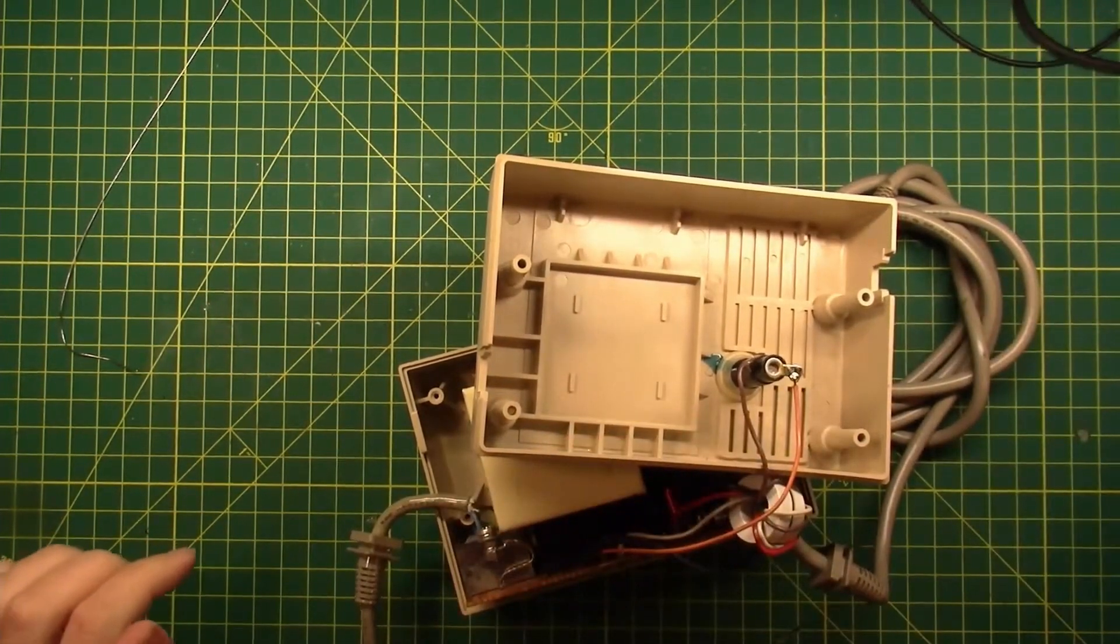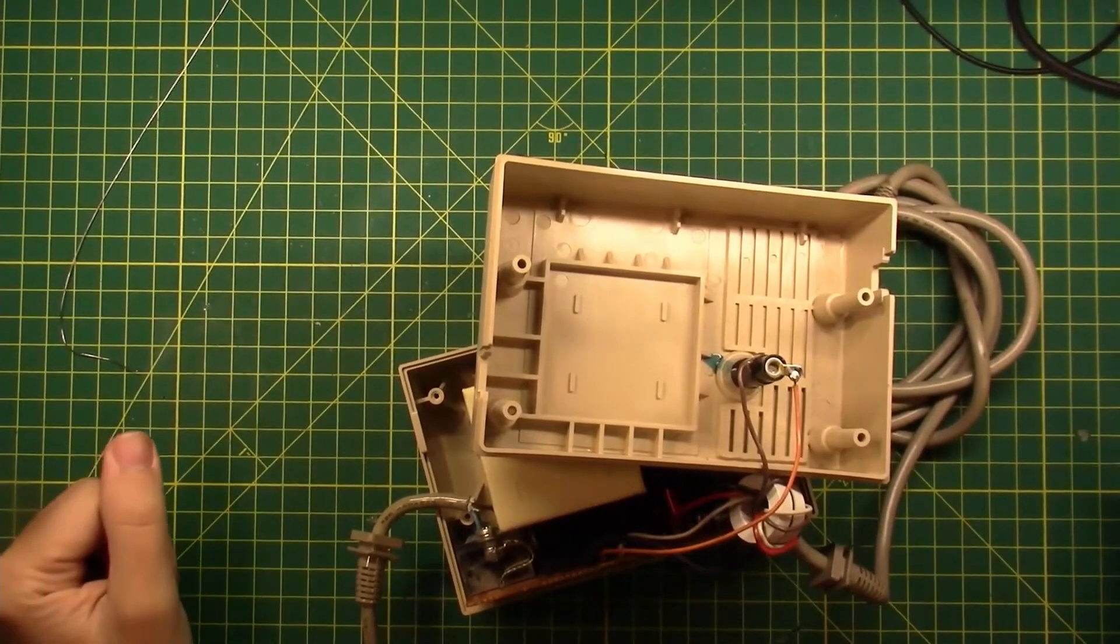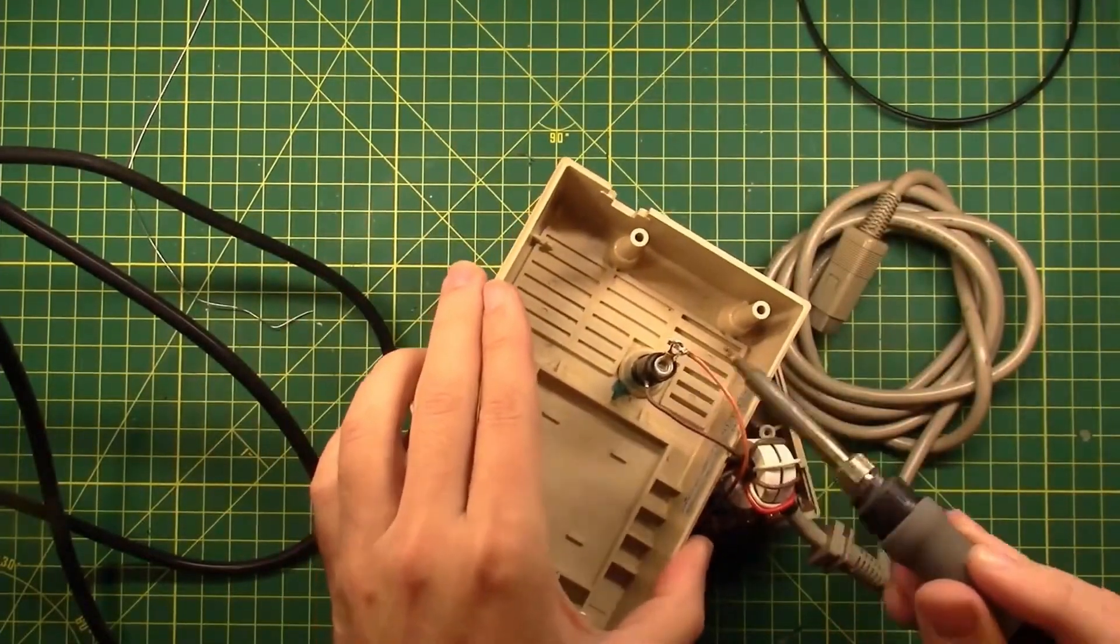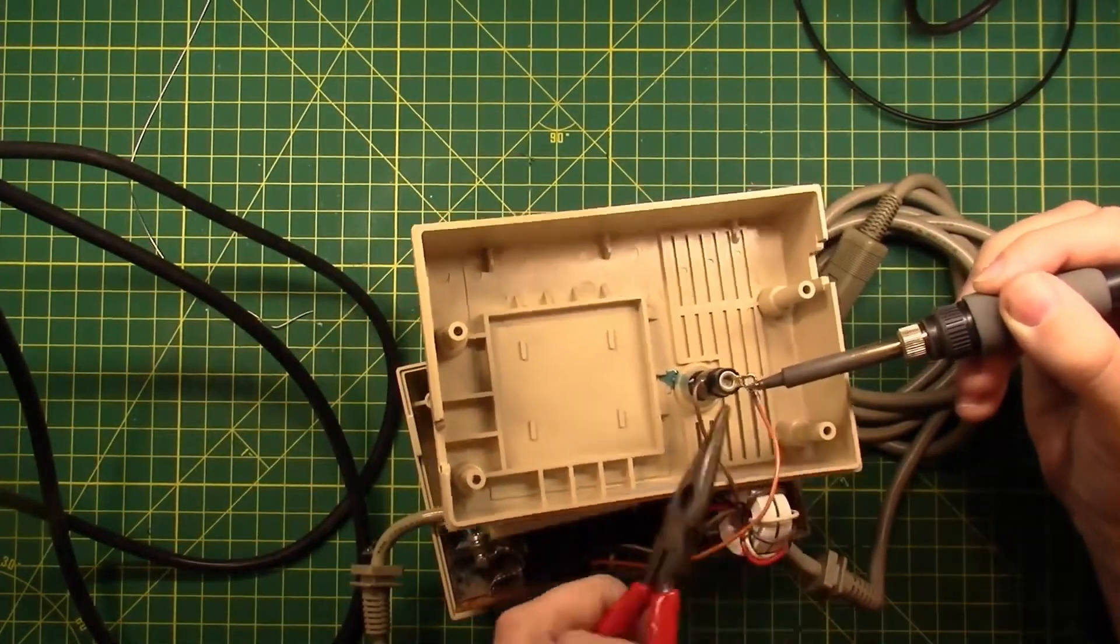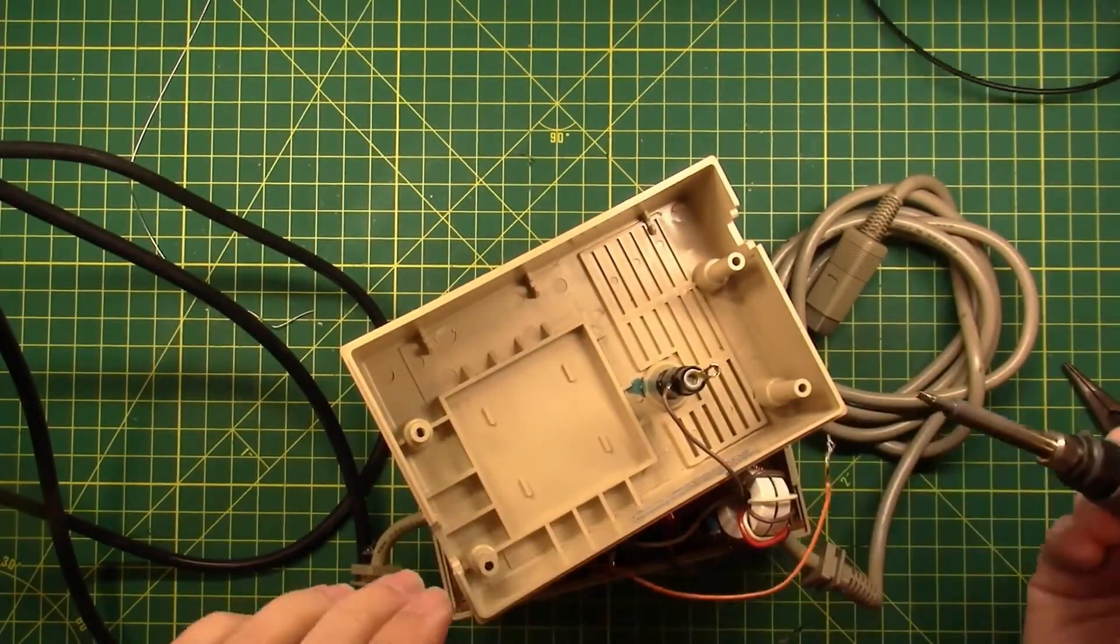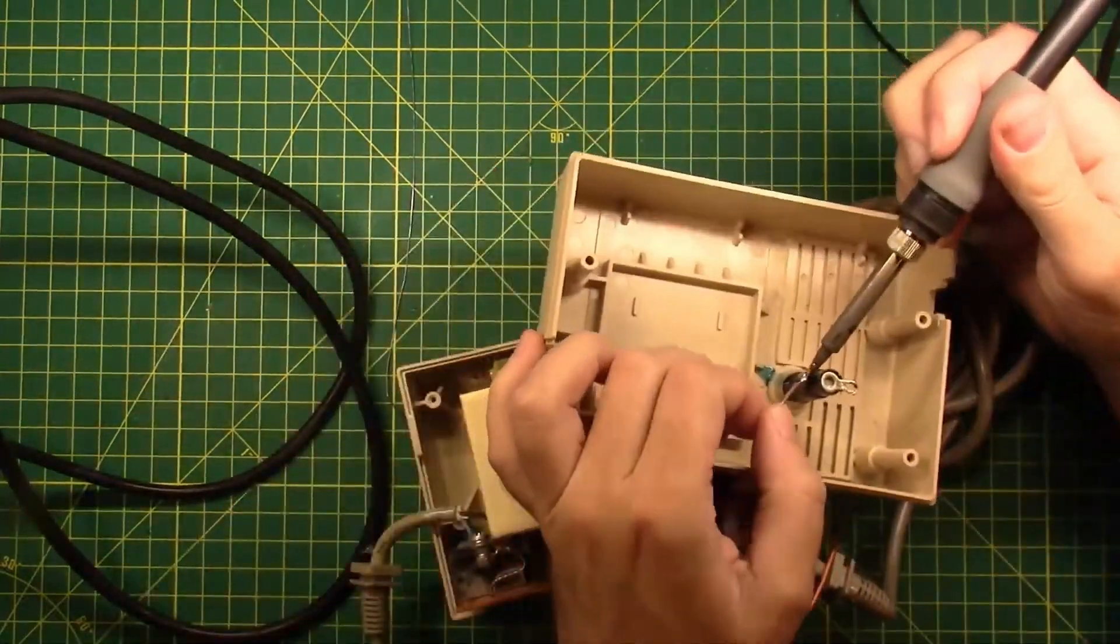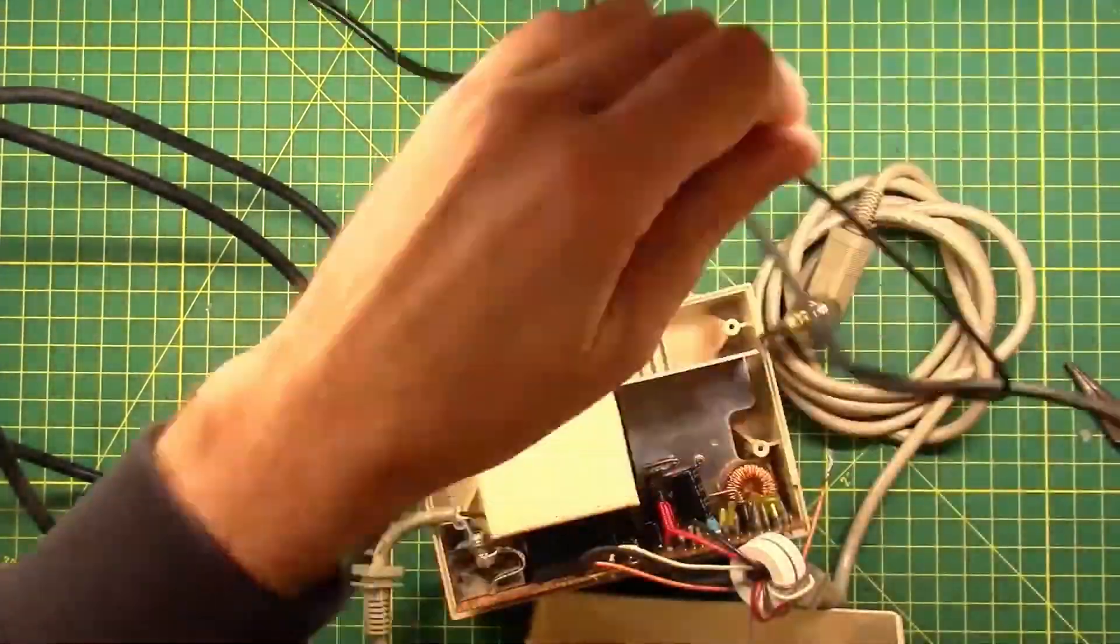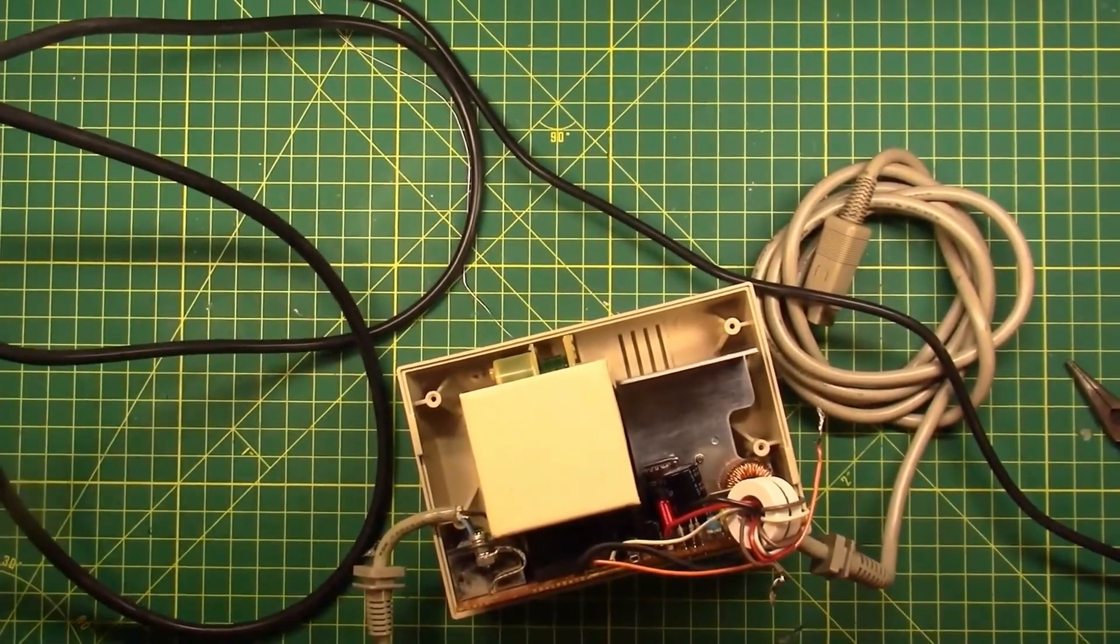It looks like they might have tied it in a knot. Warm up the other desoldering iron and get some of this liquid out of the way so we can see. That's done.